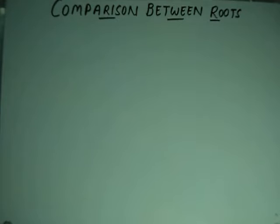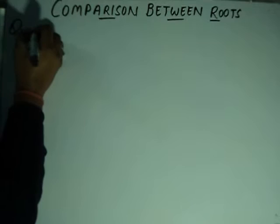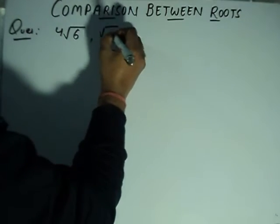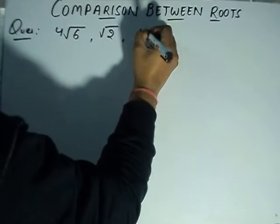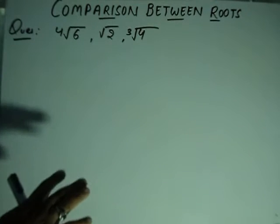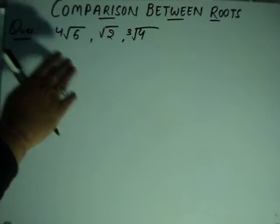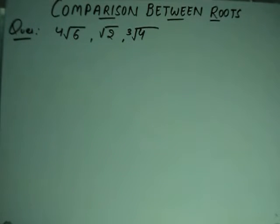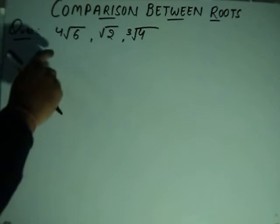We have some questions like this where we need to know the order — which one is big and which is small, like in descending or ascending order. We can do this in two ways: one is the approximation method, and the other is the LCM method.